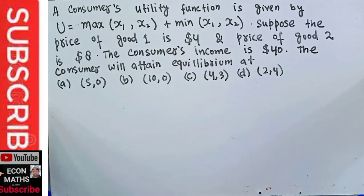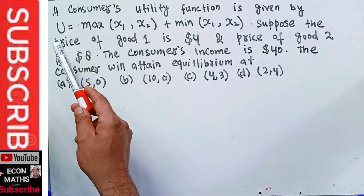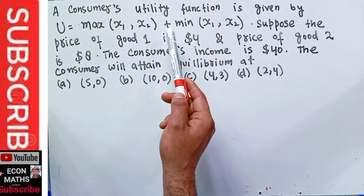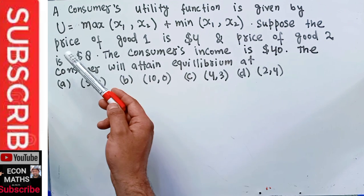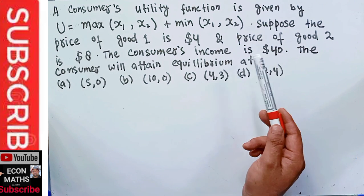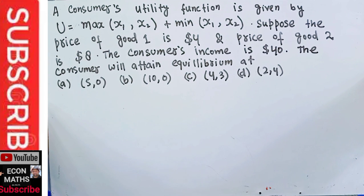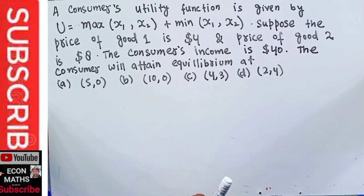Let us solve an interesting question on min and max functions on utility. The utility function is U = max(x1, x2) + min(x1, x2), where x1 and x2 are the two goods. The price of good one is $4, price of good two is $8, and the consumer's income is $40. We need to find the combinations of x1 and x2 where the consumer attains equilibrium.